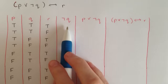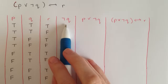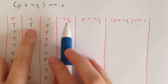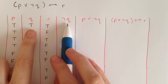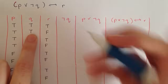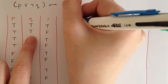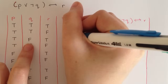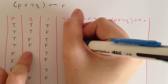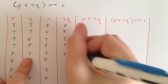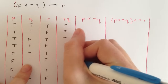Then we head over to the not q column. We've already done the q column, so the not q column is going to be the exact opposite of that one: false, false, true, true, false, false, true, true.